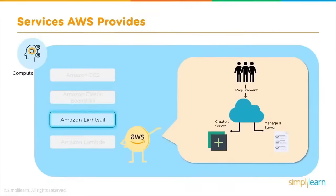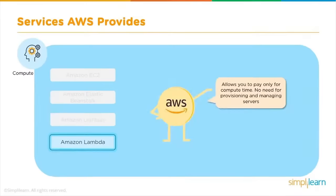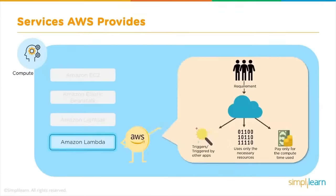Amazon LightSail is a virtual private server — the easiest way to get started with AWS for developers who just need a VPS. LightSail includes SSD-based storage, a virtual machine, data transfer tools, DNS management, and a static IP at a low and predictable price. AWS Lambda has taken cloud computing to a whole new level — it allows you to pay only for compute time with no provisioning or managing of servers. Lambda executes your code only when needed, scales automatically from few requests per day to thousands per second, and you pay only for compute time consumed.